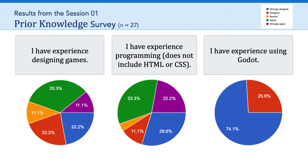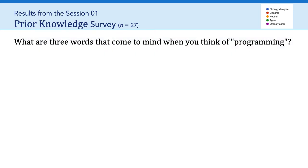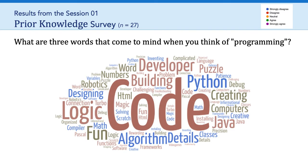And then finally, I have experience using Godot, and this arguably is the great equalizer — everyone said they disagreed or strongly disagreed. Just for fun, I asked you what are three words that come to mind when you think of programming, and I did a little word cloud to show you what words were most popular. Code is the corollary of programming. Logic, fun, building. Python was popular. Algorithm, details, computers, so on and so forth. I want to give a shout out to Ronald, whose three words were: syntax error leads to cry. Very funny — thank you for that, Ron.